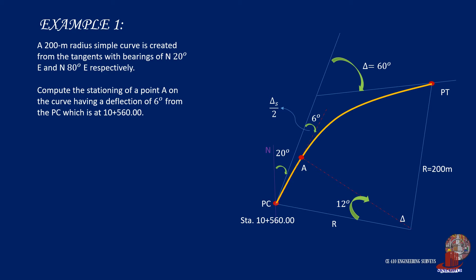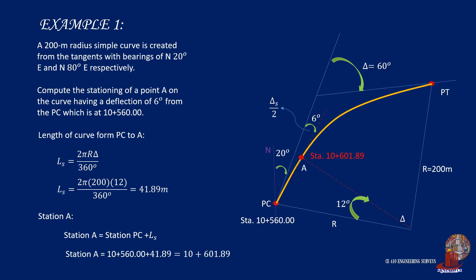By knowing delta and the radius did not change, we can solve for the length of the partial curve by the same formula. Substituting values, we get 41.89 meters. To find the station, start from the given station PC, which is 10 plus 560, then add the length of the curve, which is 41.89 meters. So we get 10 plus 601.89.